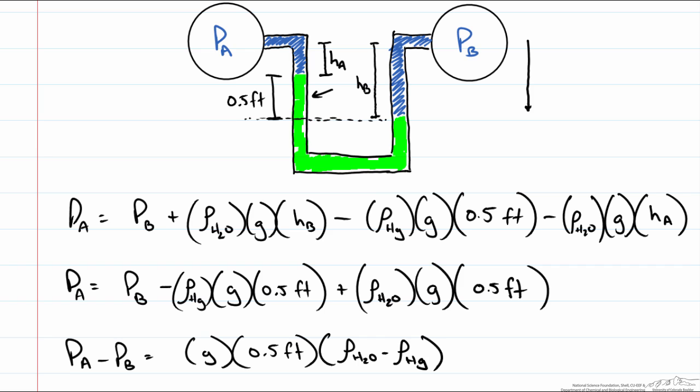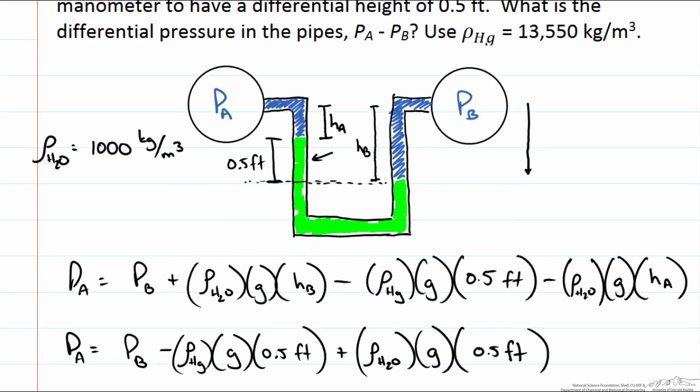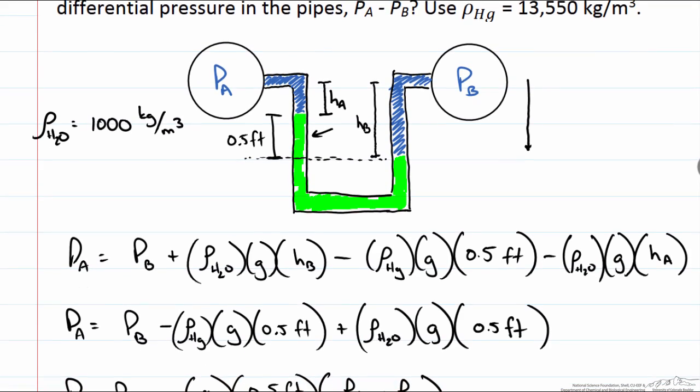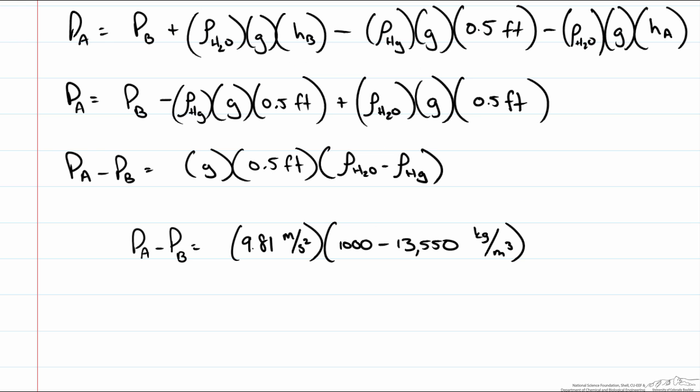So for our calculation let us use that the density of water is 1000 kg per m3 and what you should notice is that I have not been consistent with units but since we were given that the density of mercury is in kg per m3 we could use our known density of water at 1000 kg per m3 in most cases and just convert our feet into meters. 0.5 feet is approximately 0.152 meters.